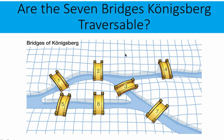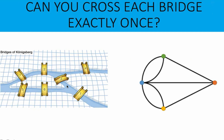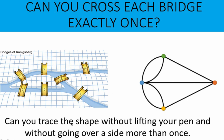Going back to the question of this network of bridges being traversable — if we can represent this network of bridges as vertices and lines connecting those vertices, then we are forming a graph that we can analyze whether it's traversable or not. In layman's terms, if we can trace the shape of a graph without lifting our pen and without going over a side more than once, then we say that the graph is traversable. In other words, if we can cross each bridge of the Königsberg bridges exactly once, then we can say the bridges are traversable.